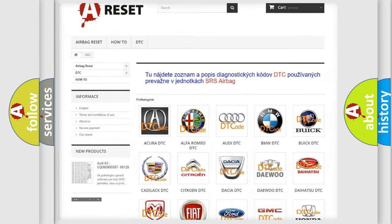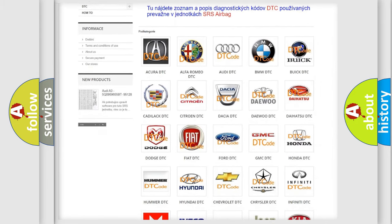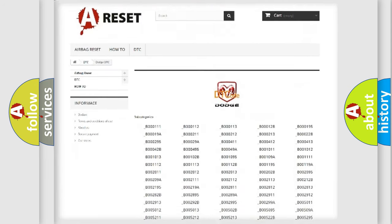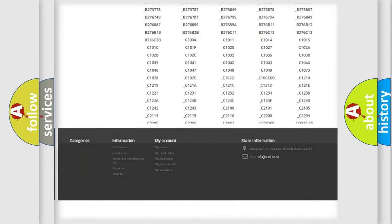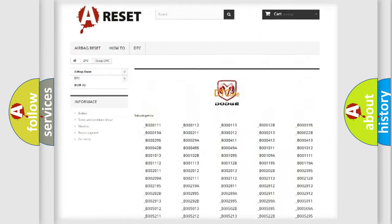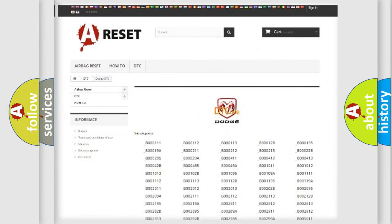Our website airbagreset.sk produces useful videos for you. You do not have to go through the OBD2 protocol anymore to know how to troubleshoot any car breakdown. You will find all the diagnostic codes that can be diagnosed in Dodge vehicles.